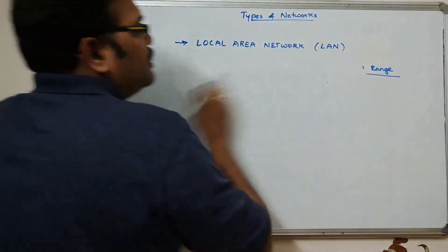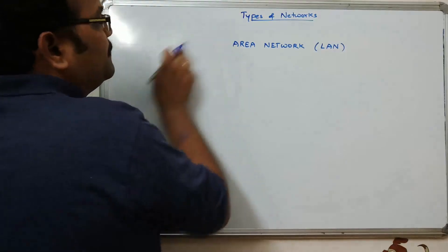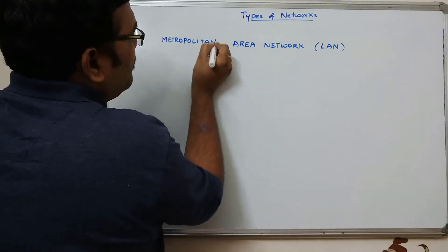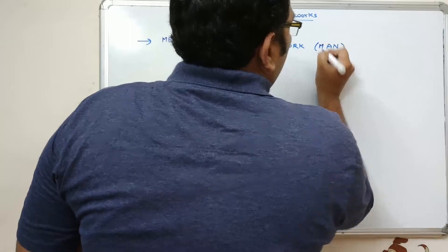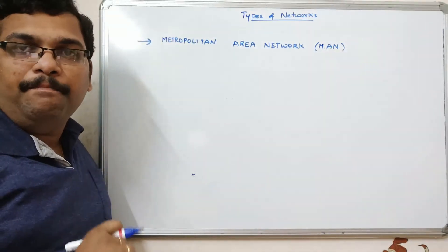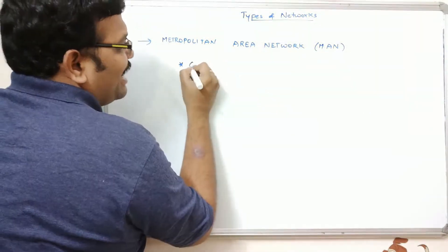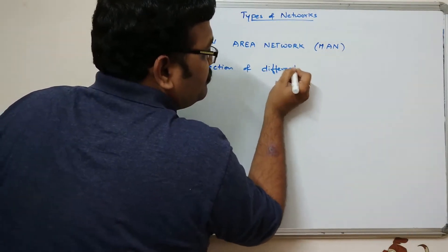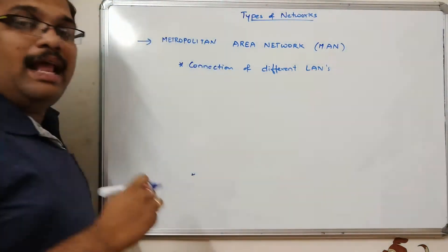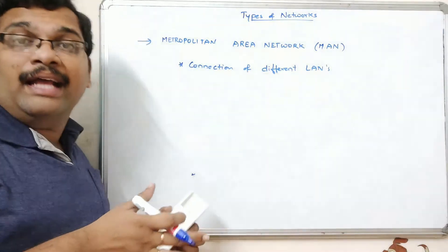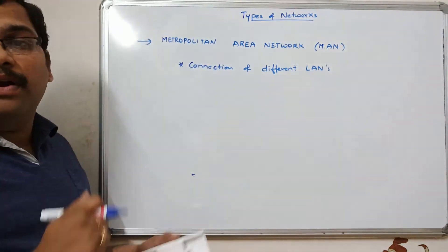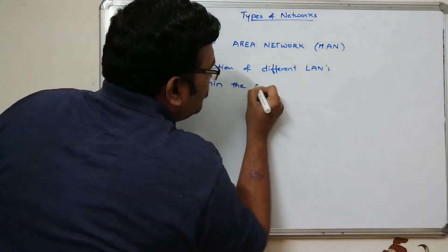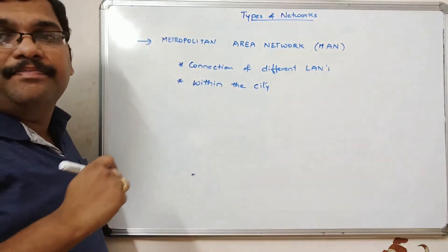Now we'll go with the second type: Metropolitan Area Network. Commonly known as MAN, it is a connection of different LANs. Since a LAN is a local area network, connecting different LANs forms a metropolitan area network, which can span within a city or between cities.